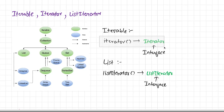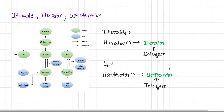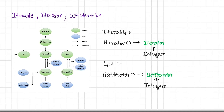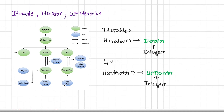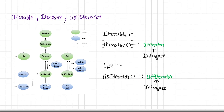The iterator method returns an instance of iterator, and list iterator returns an instance of list iterator — and list iterator is also an interface. However, if you look at collections like ArrayDeque and PriorityQueue, these only implement the queue interface, which only extends collection and then iterable. This means PriorityQueue, ArrayDeque, TreeSet, and all other such collections do not implement list iterator.